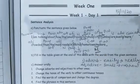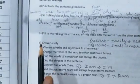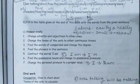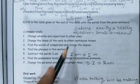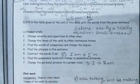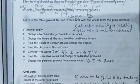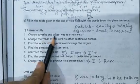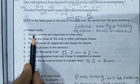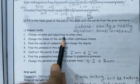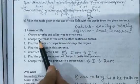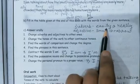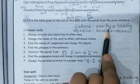Now you can see here some questions have been given. You have to write the answers one by one as I have written, and give a number to each and every answer as I have mentioned. Question 1 is: change the adverbs and adjectives to other ones. So first of all, see which adverbs and adjectives have already been given. The adverb given is 'easily'.